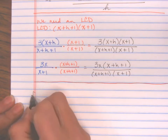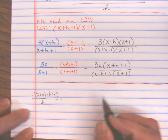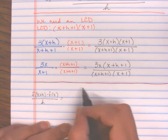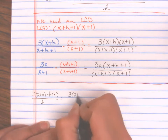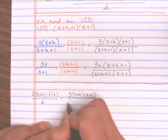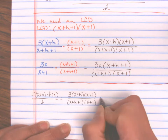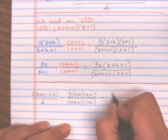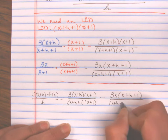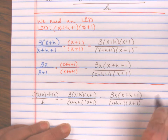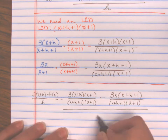Now my difference quotient is: 3(x+h)(x+1) over (x+h+1)(x+1), minus 3x(x+h+1) over (x+h+1)(x+1). And we cannot forget that this entire expression is still divided by h.